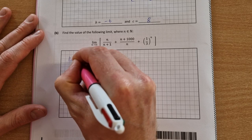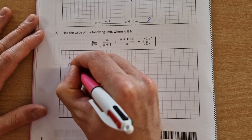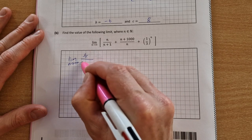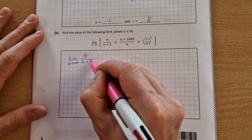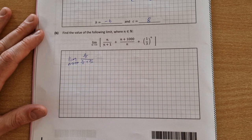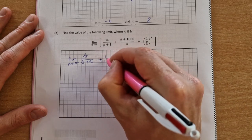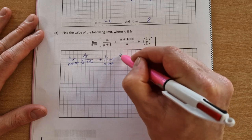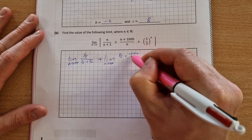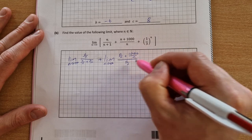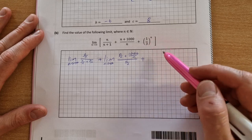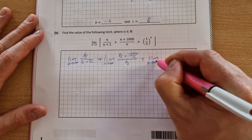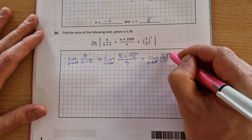So I'm going to take the limit as n tends towards infinity of n over n over n over n plus 1 over n. So I've just put n under each one of them, and then we take the next one plus the limit as n tends to infinity of n over n plus 1000 over n over n over n. And then for this one, the third to the power of n, we don't need to do anything to it. So that's the limit as n tends towards infinity of a third to the power of n.